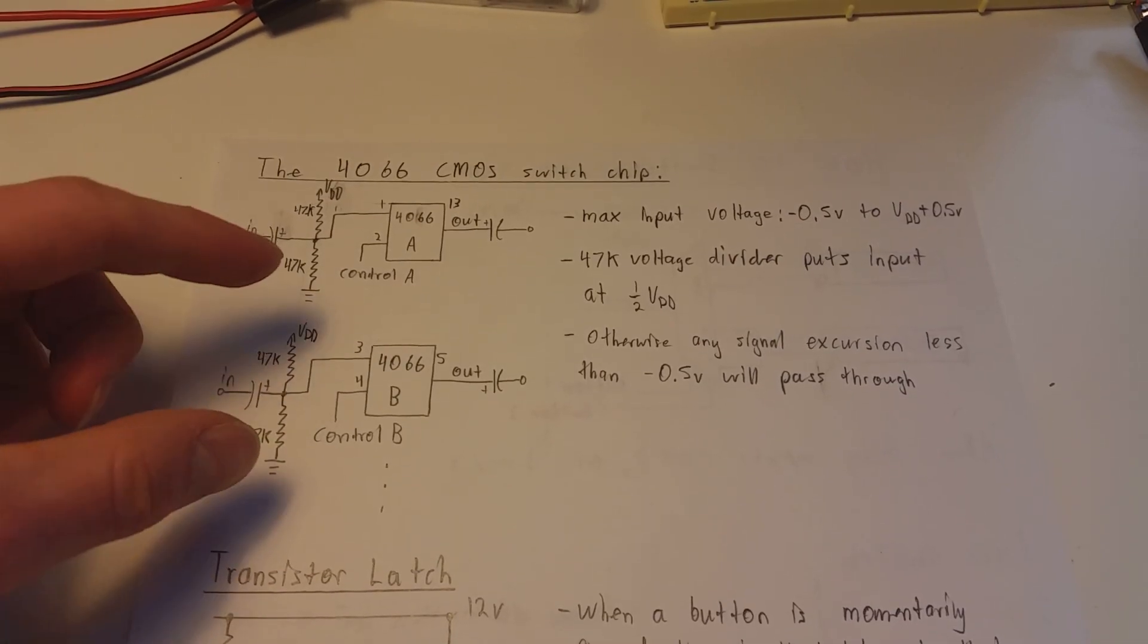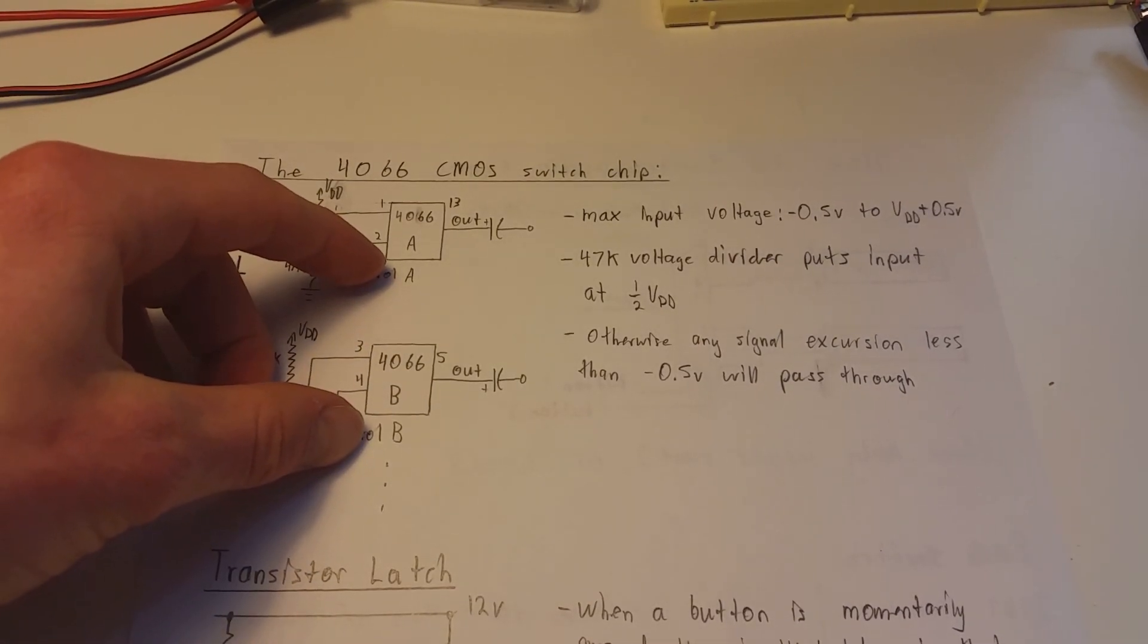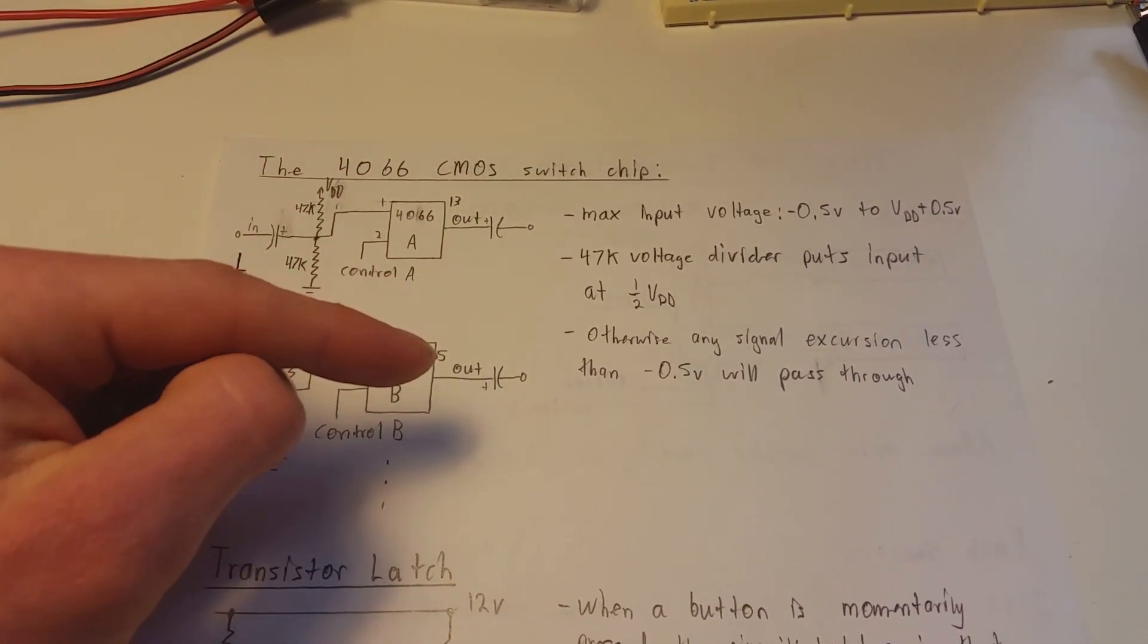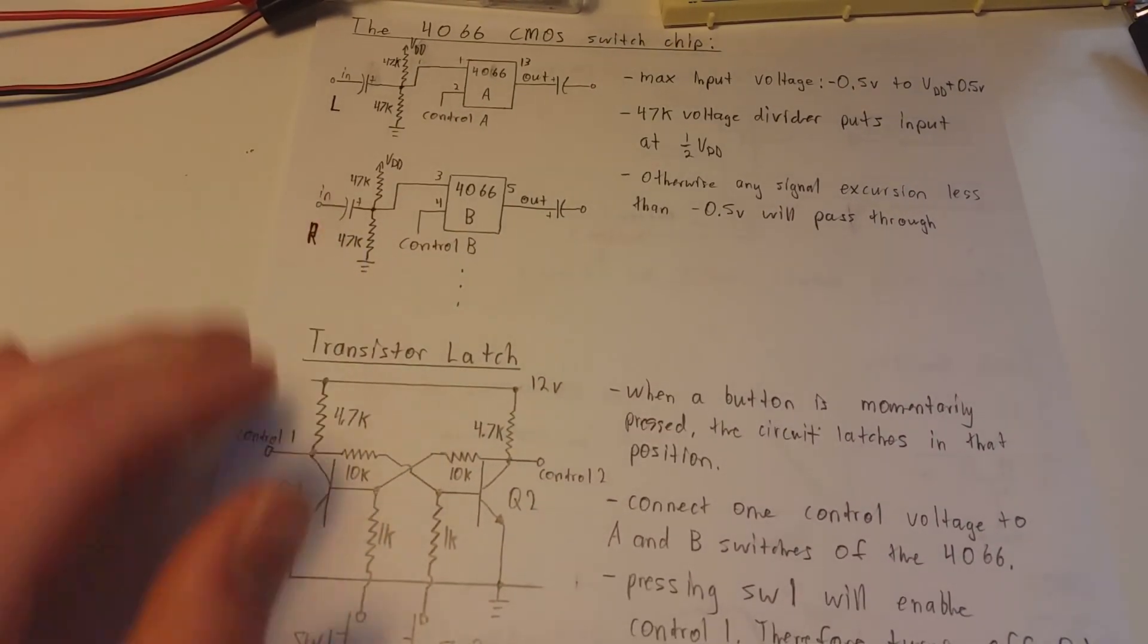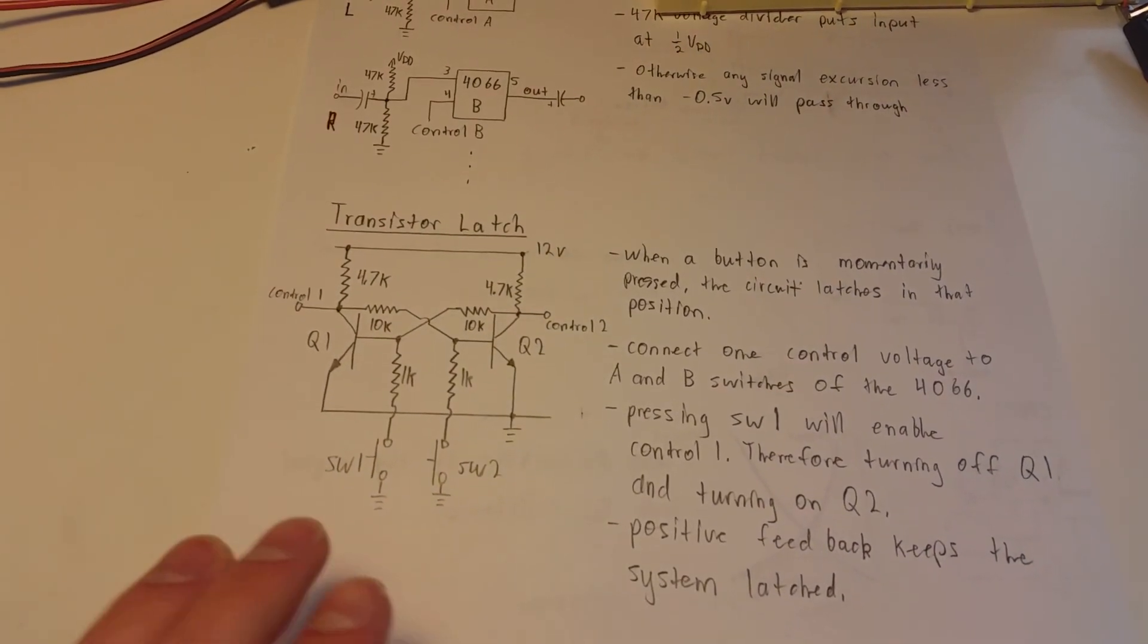And so what we can do then is take these two control voltages and tie them together, and we can just modulate that one, and we can switch both of these on and off. And we'll do that with a transistor latch.